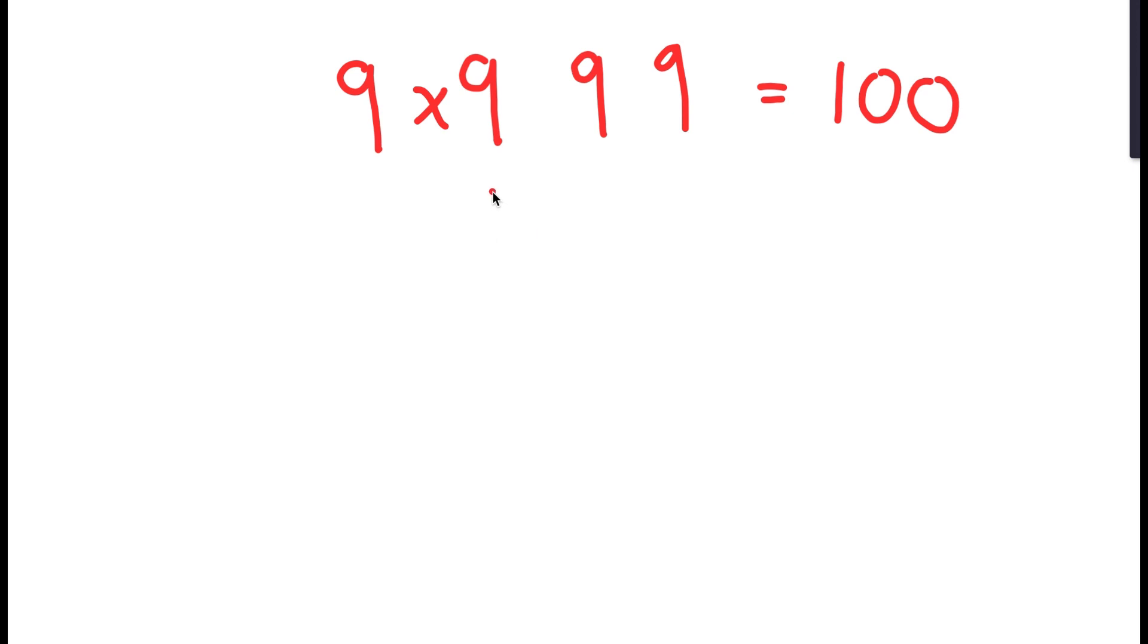Now why don't we try using division? What if we divide 9 by 9 and then multiply that by 9 and then multiply that by 9 as well? Well, 9 divided by 9 is 1, and 1 times 9 times 9 is equal to 81. So this is not equal to 100.